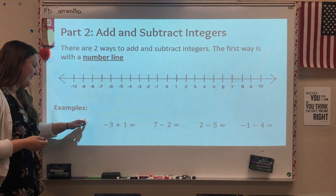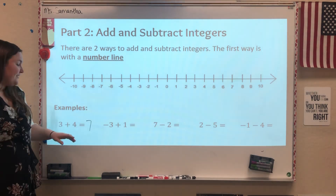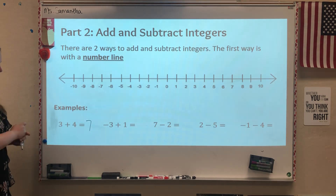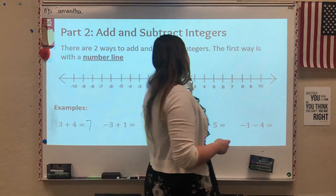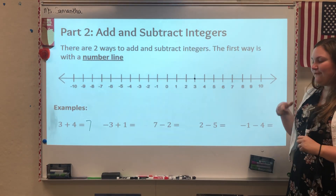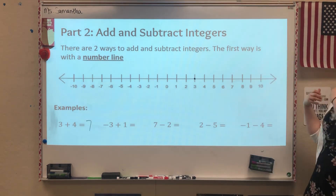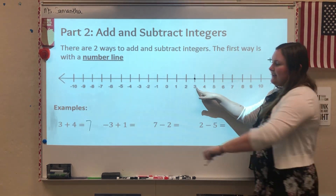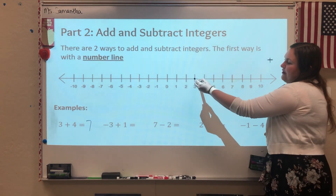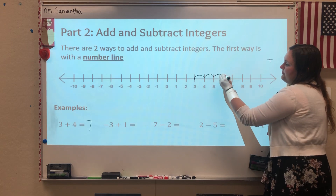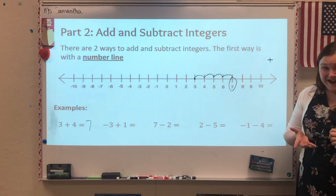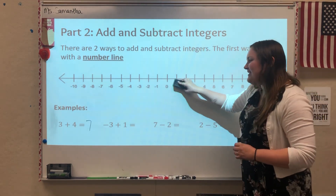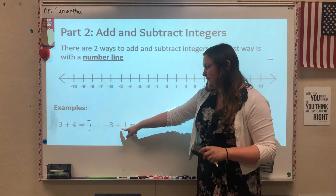I've got the first problem here — something you guys already know: 3 plus 4 is 7. But you might not know how you can show that on a number line. If I wanted to show why 3 plus 4 is 7, I could start at 3 on my number line and then show adding 4. When you add something, it's getting bigger — it goes towards the larger numbers. I'll put a little plus sign here to remind me: if I'm adding, I go this way. Starting at 3 and adding 4, I count 1, 2, 3, 4 in that direction, and that shows me why the answer is 7.